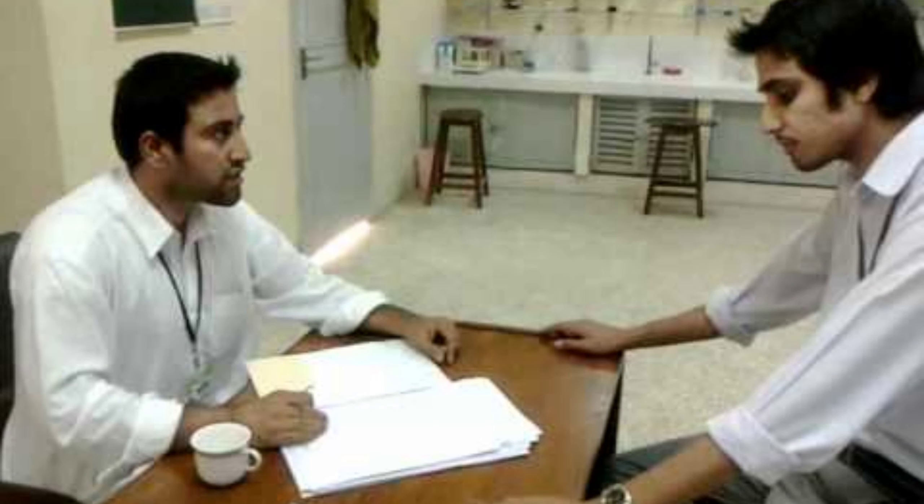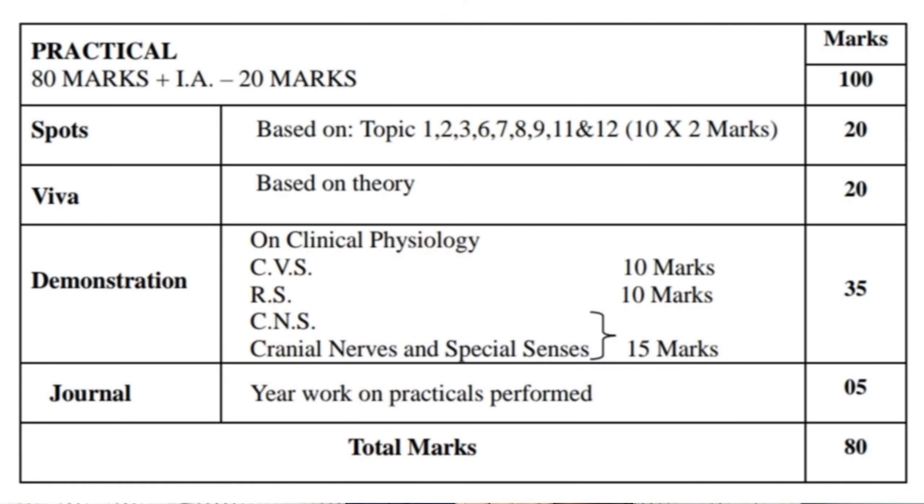Secondly, we have viva. Then, we have a demonstration. Mostly, the demonstration comes from the cardiovascular system, respiratory system, central nervous system, and cranial nerve testing and special senses. From the cardiovascular system, you can get questions like blood pressure measurement and pulse rate measurement — you should properly know how to measure blood pressure.